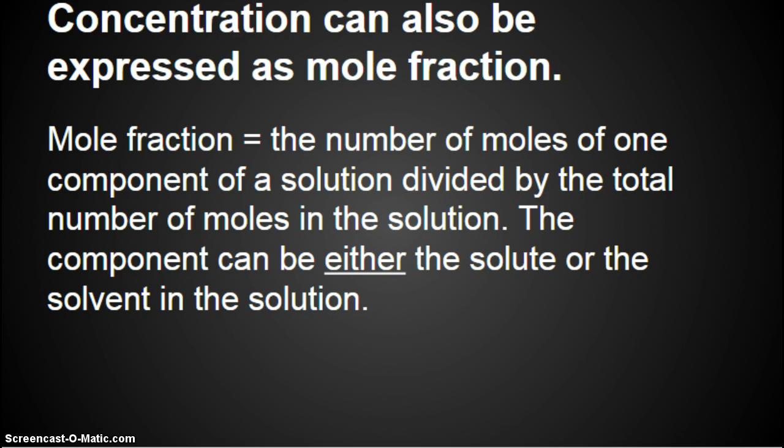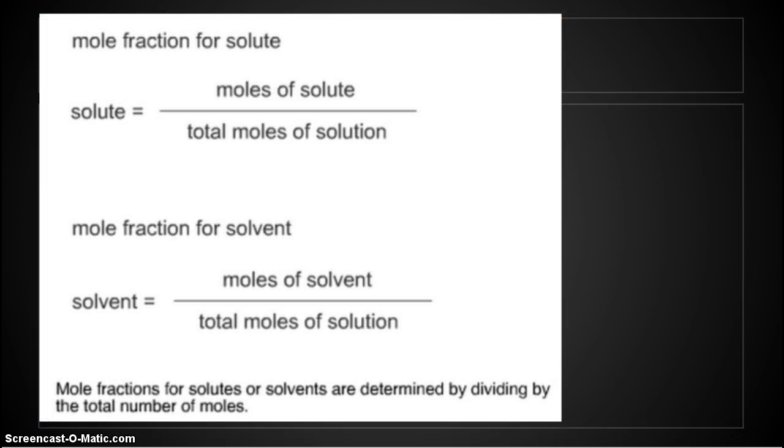The component can be either the solute or the solvent in the solution. So mathematically, it's written like this. So if I want to find the mole fraction of the solute, I take the moles of solute divided by the total moles of the solution. So how do I get total moles of the solution? I need to add up moles of solute plus moles of solvent.